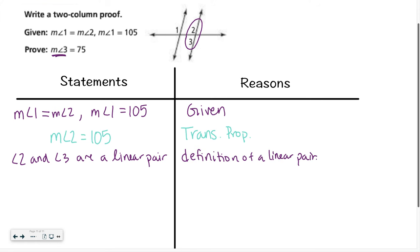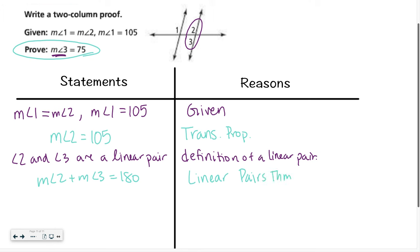I know that angle 2 and angle 3 are a linear pair just by definition of a linear pair. What else do I know about a linear pair? They have to add up to 180. I can see that my prove statement involves numbers, so I want to change from words to numbers. Measure of angle 2 plus measure of angle 3 equals 180 — that was our linear pairs theorem. Now that I've added them together to equal 180, I also know the measure of angle 2 already. So I'm going to say 105 plus the measure of angle 3 equals 180, and that is just called substitution — I swapped out a number for measure of angle 2.